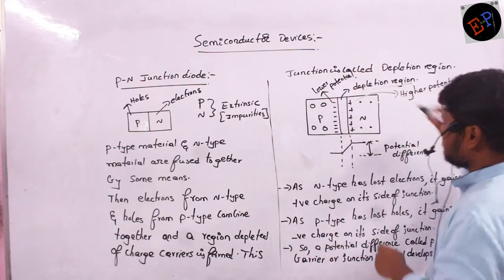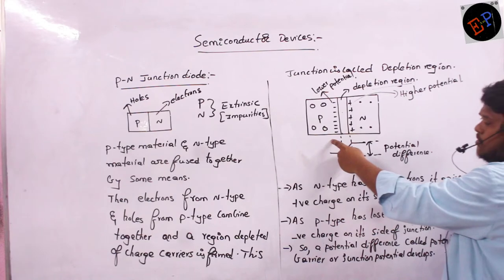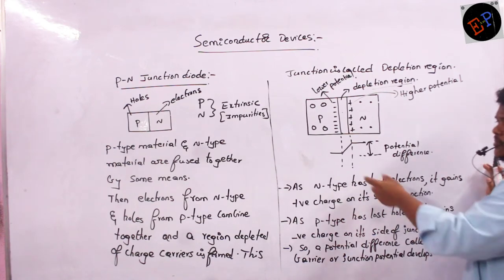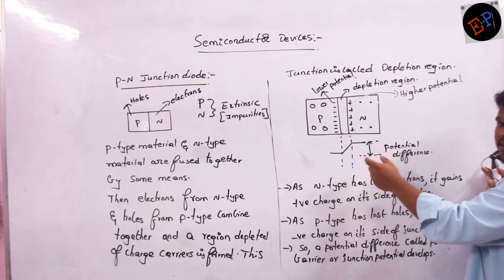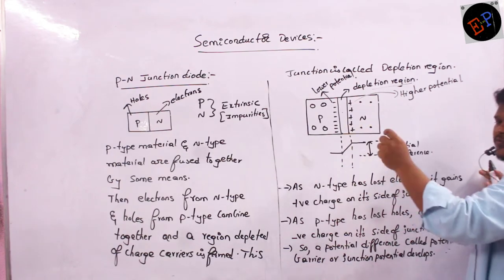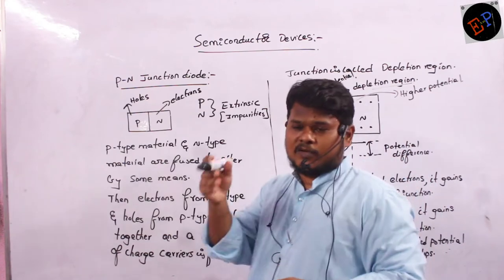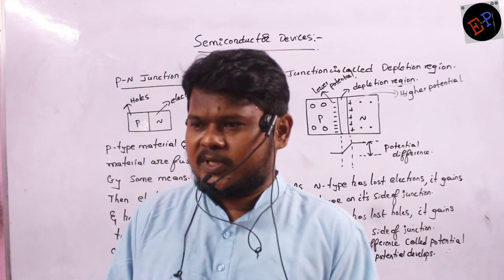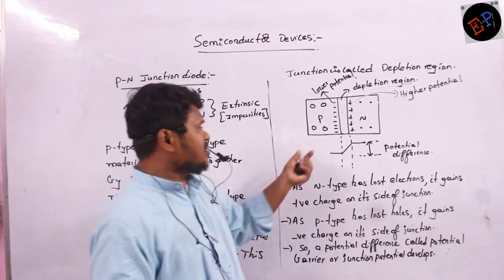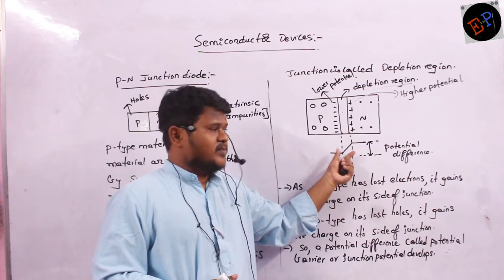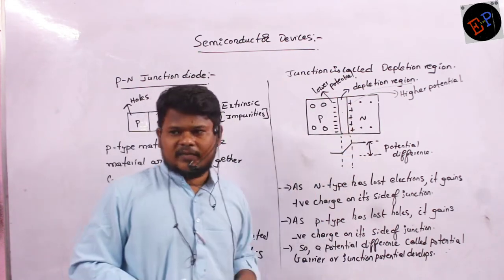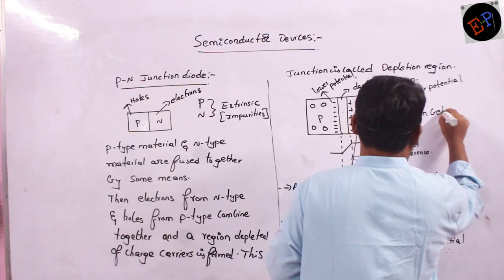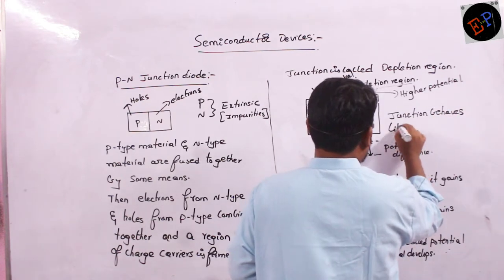Therefore, the N-side is at higher potential, the P-side is at lower potential. So definitely there is a potential difference developed. This junction is behaving like a virtual battery which has developed some potential difference. Battery supplies potential difference — so this junction is also behaving like a battery. Junction behaves like a virtual battery.